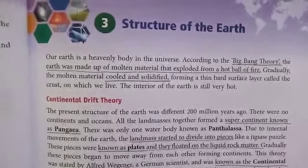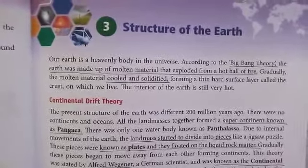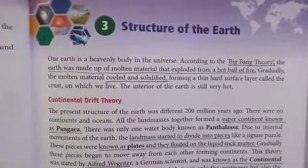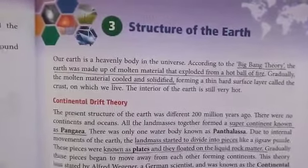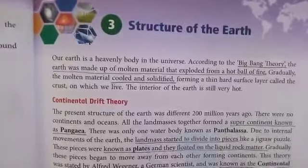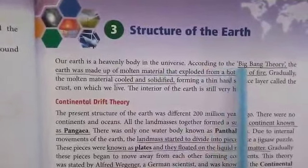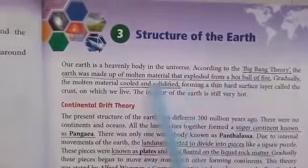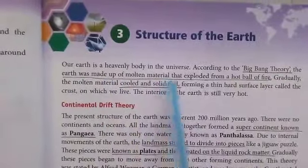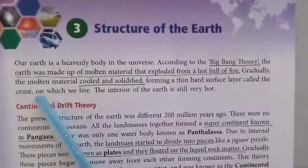Good morning. Today we'll study about the third chapter, Structure of the Earth — how the earth is formed and what are the different layers of the earth. Our earth is a heavenly body in the universe. According to the Big Bang Theory, the earth was made up of molten material that exploded from a hot ball of fire. Gradually, the molten material cooled and solidified, forming a thin hard surface layer called the crust, on which we live.